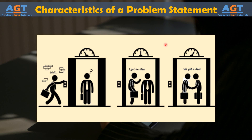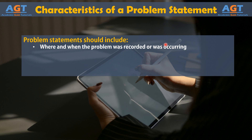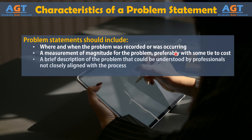Project statements should include: where and when the problem was recorded or was occurring; a measurement of magnitude for the problem, preferably with some tie to cost; and a brief description of the problem that could be understood by professionals not closely aligned with the process.